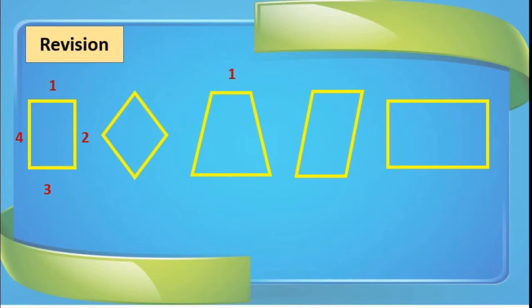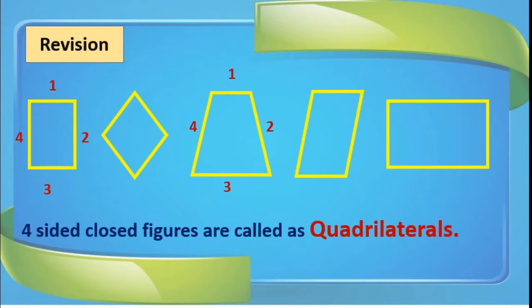Now we will count the sides of one more figure — that is 1, 2, 3, and 4. I think you came to know the similarity. That is, four-sided closed figures are called quadrilaterals. These figures have different shapes but all have four sides and all are closed figures, so we call them quadrilaterals.